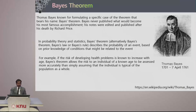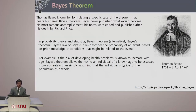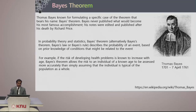Let us move on to Bayes theorem, now that we have seen what conditional probability is. Bayes theorems are based on this conditional probability and can help us formulate various cases. This was formulated by Thomas Bayes, who contributed a lot to statistics through his Bayes law and Bayes rules. Though he did not publish his original work, it was published by Richard Price after Bayes' death.